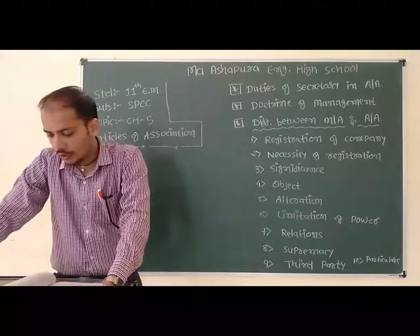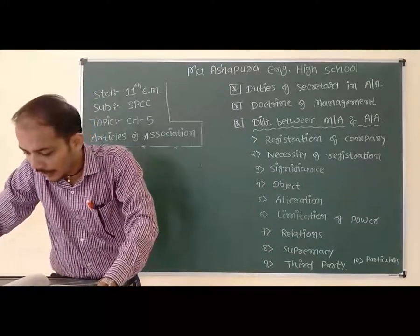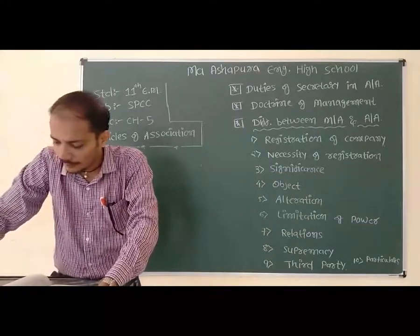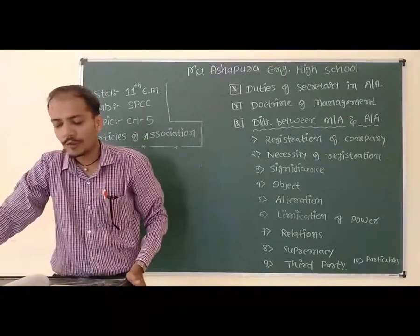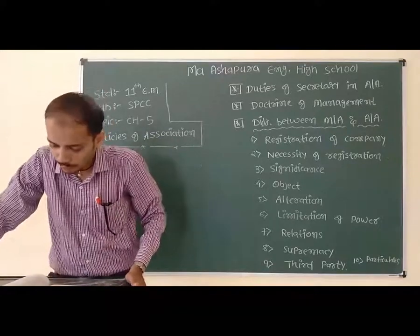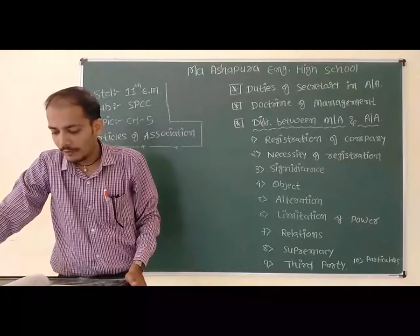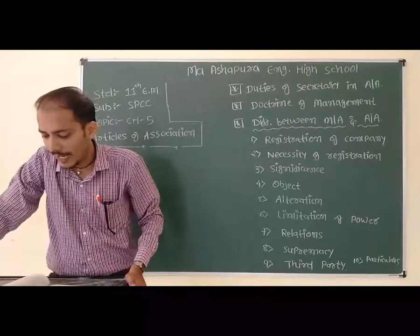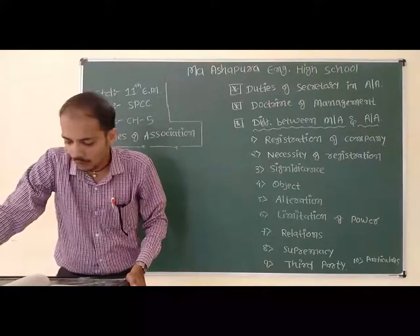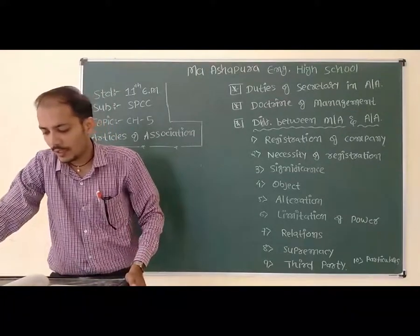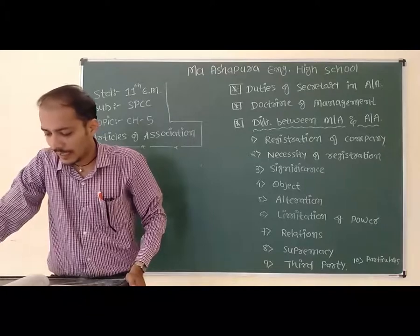Point number 6: Make arrangements to obtain the permission of the tribunal in any matter where the same is necessary. If the tribunal's permission is required, then the arrangement is required. Point number 7: After including the alteration in the Articles of Association, the newly printed copy of the Articles of Association is to be registered with the registrar within a prescribed period.